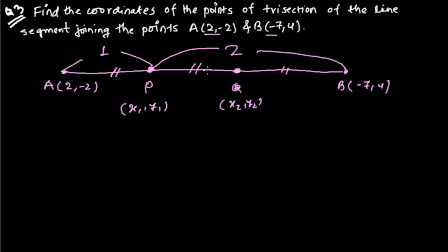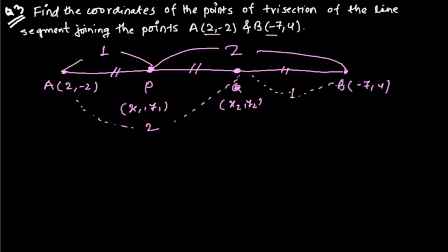If you talk about Q, on the left side there are two equal parts and on the right side one equal part. So Q is dividing AB in the ratio 2 : 1, and P is dividing the whole AB line in the ratio 1 : 2. Let me first find out the coordinates of this P point.